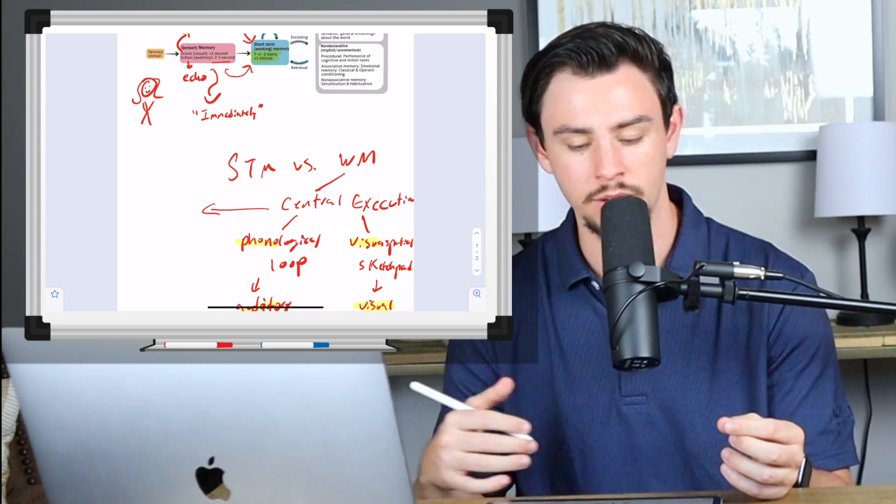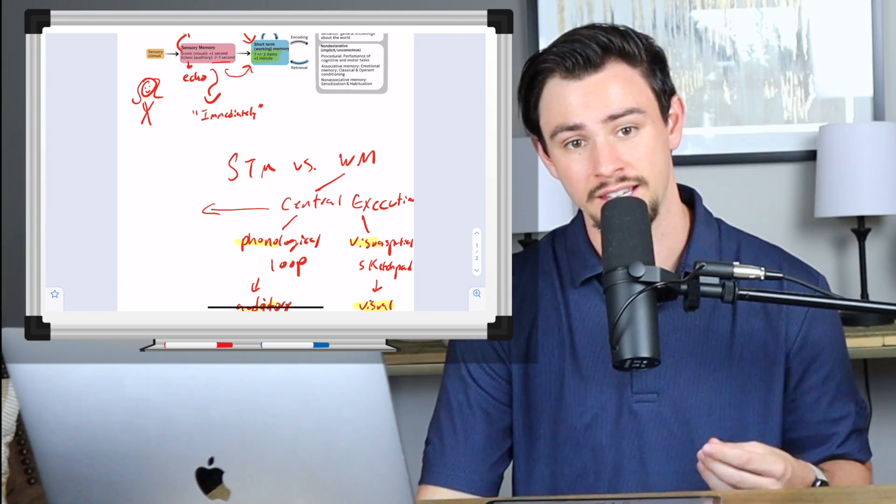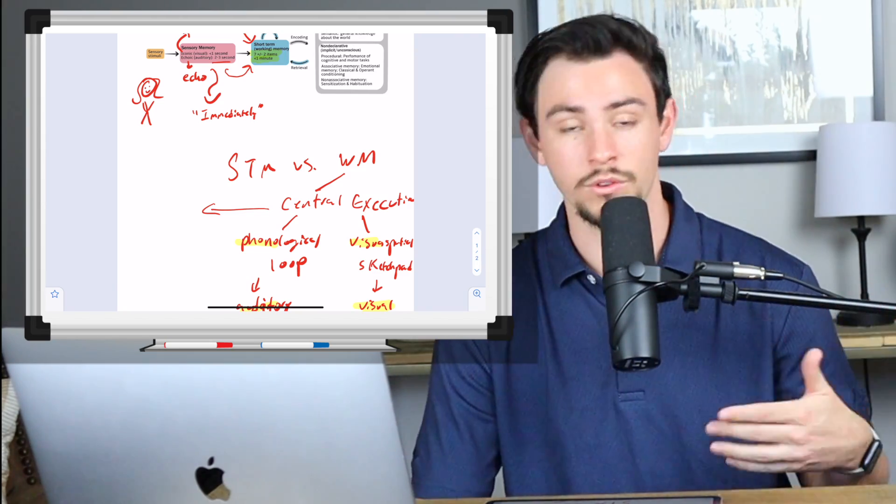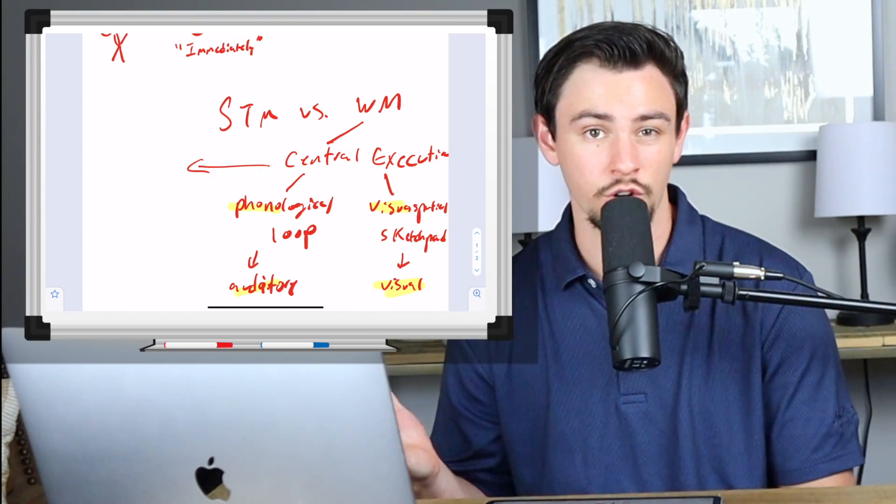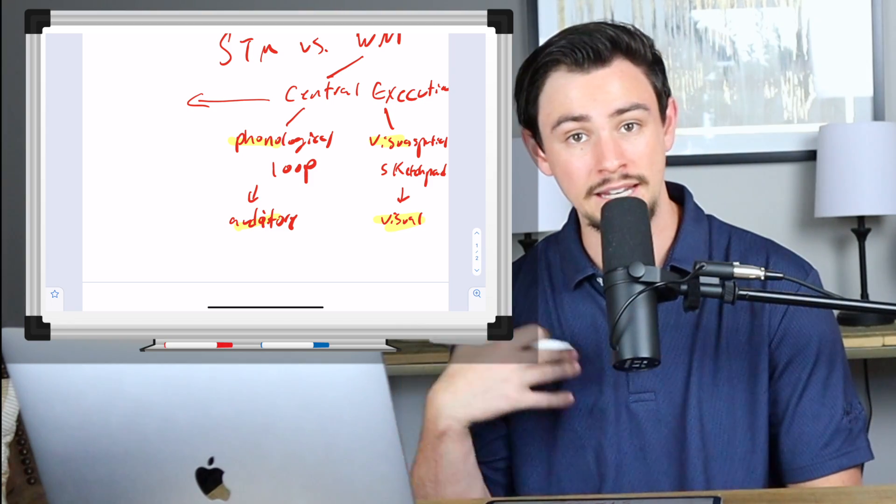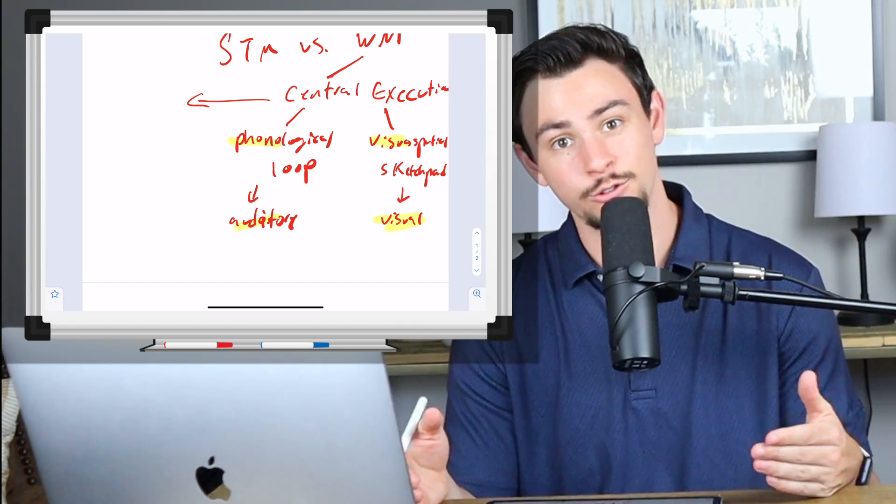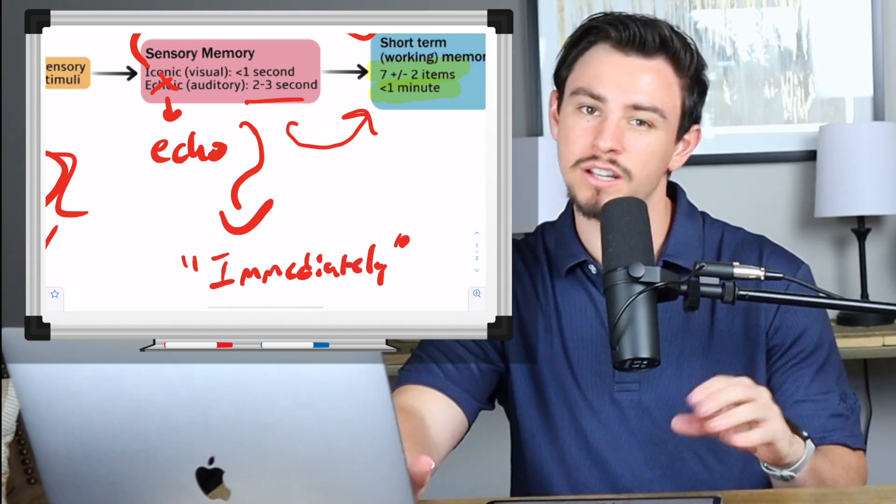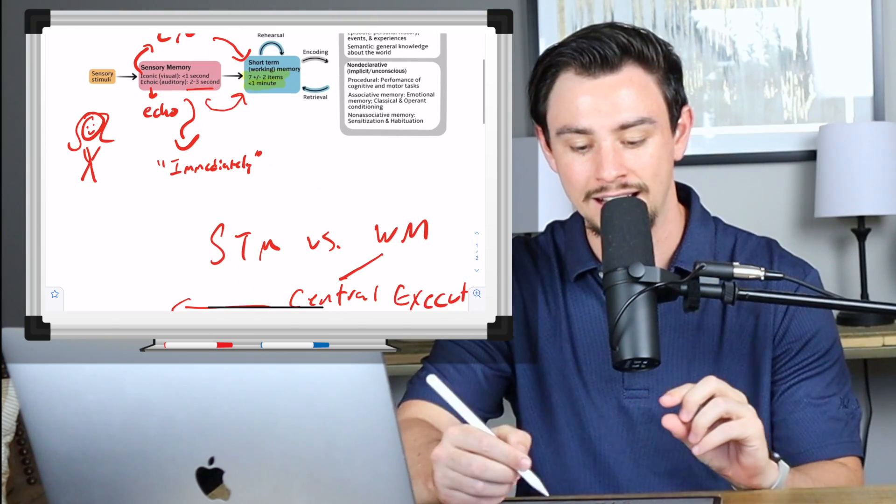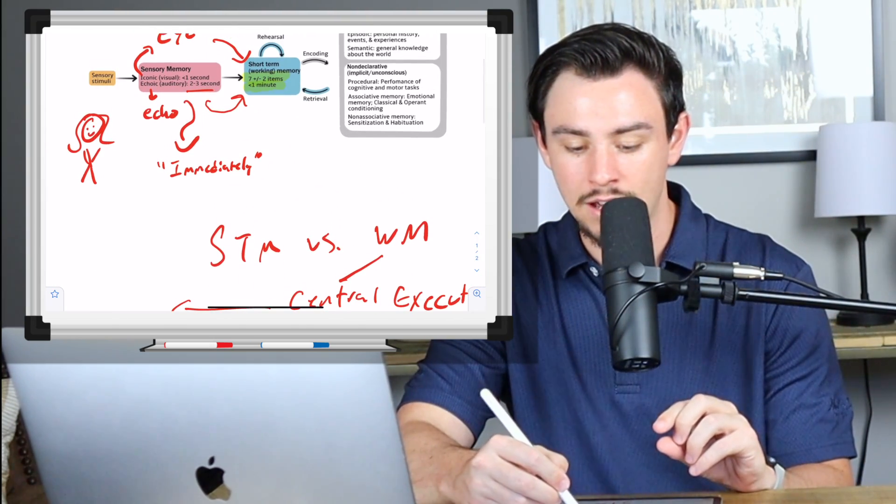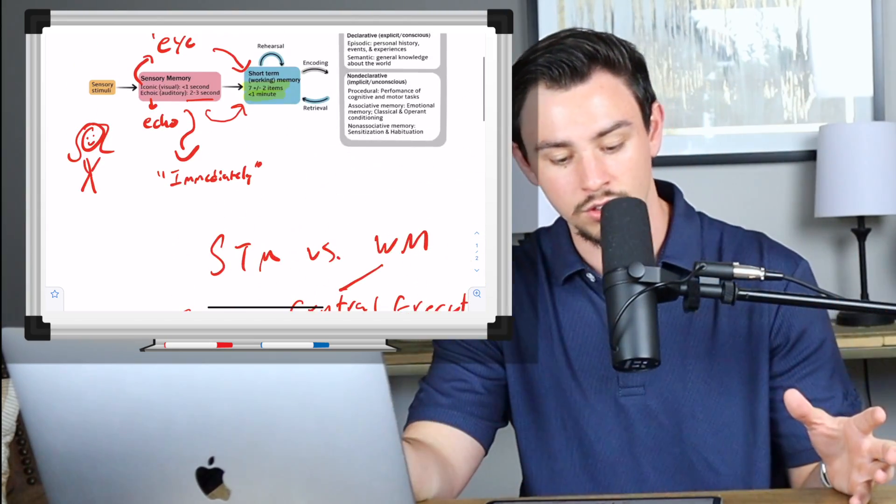Now, once you have these memories, you can rehearse them, whether this just be through something called maintenance rehearsal, which is like, you know, chanting a phone number over and over again so that you never forget it. Or you can do something called elaborative rehearsal, which is the idea of actually making the material meaningful to you so that it sticks. If you're studying, you should do the elaborative rehearsal, but those really aren't super high yield. Maintenance rehearsal versus elaborative rehearsal are not very high yield, but what they do is they allow us to encode, which means to transfer memory from the short term into the long term.